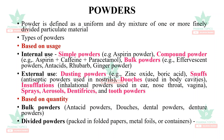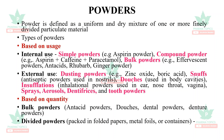Based on quantity, there are two classifications: bulk powders and divided powders. Bulk powders include antiseptic powders, douches, dental powders, and denture powders. Divided powders are packed in folded papers, metal foils, or containers.